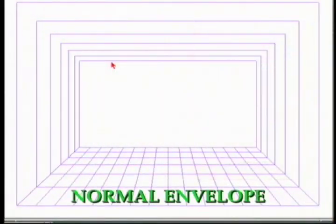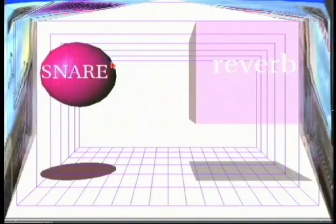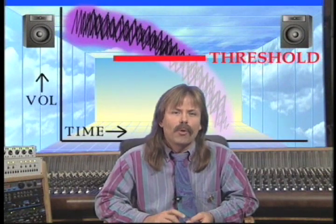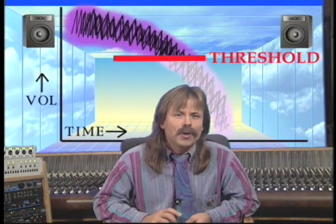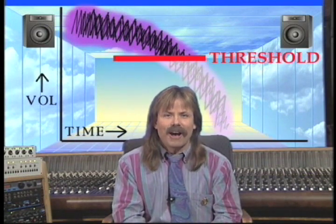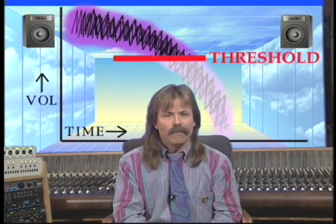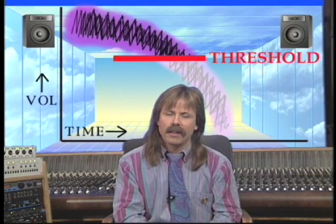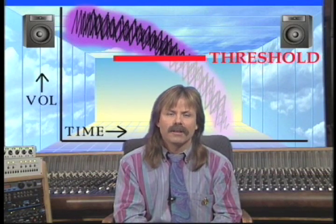Another setting of reverb is the envelope — that is, how the reverb changes its volume over time. Normal reverb has an envelope that looks like this. Engineers, being the bored people they are, thought to put a noise gate on this natural reverb, which then chops it off, so the volume stays even then stops abruptly — like this.